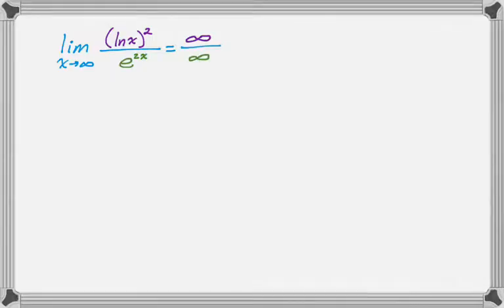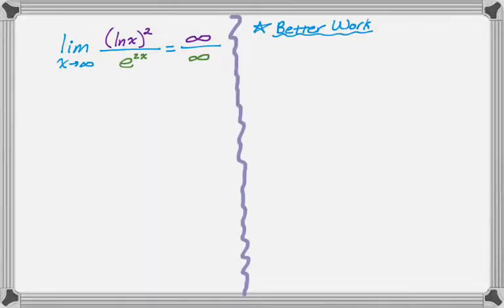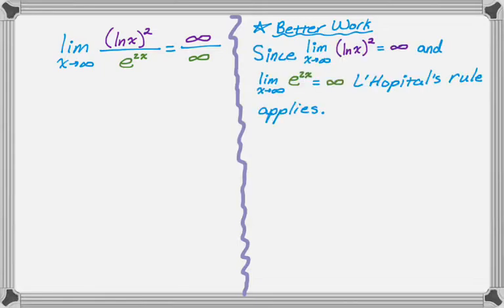That's the work that I do 98% of the time. But if a question says to show formal work or just the best work you can, I will also do something like this. So I'm going to write out what happened. Since the limit as x approaches infinity of basically the numerator is infinity and the limit as x approaches infinity of basically the denominator is infinity, L'Hopital's rule applies.